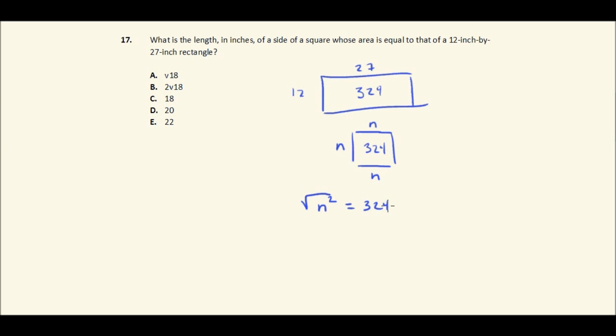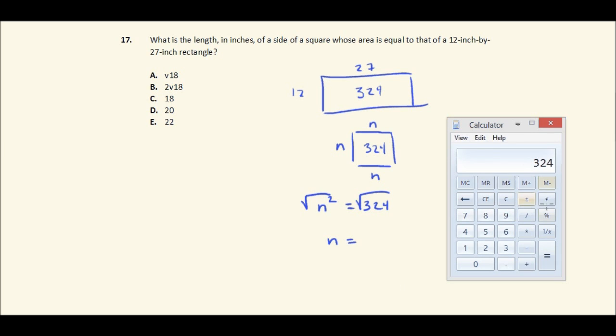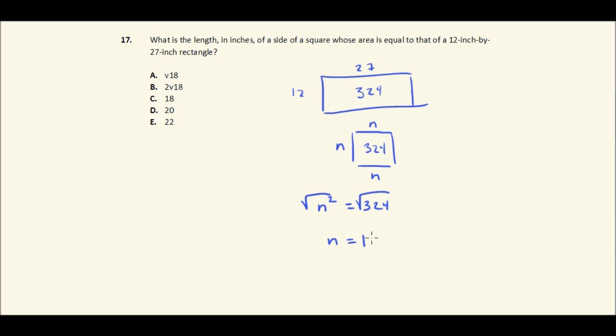Well, I can take the square root of both sides. So the square root of n squared is just n, so I get my variable by itself, which is what I want. And then I need to take the square root of 324, and maybe I'll get lucky enough, and this problem will give me a perfect square. Let's see. So I just got 324 plugged in. I'll take the square root of it, and there we go. It happens to be 18. So the answer is C.